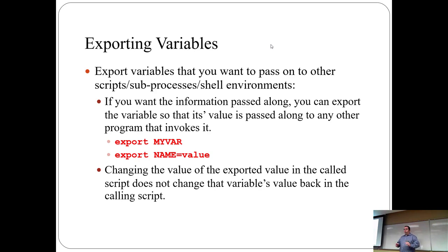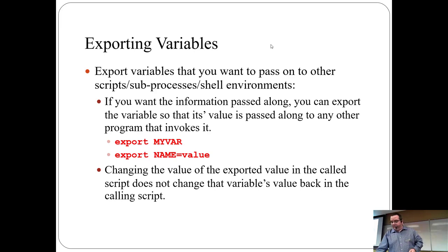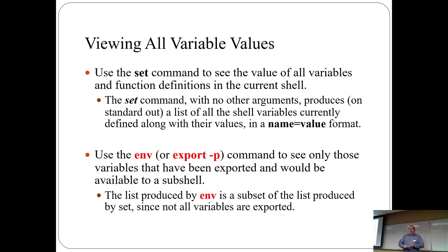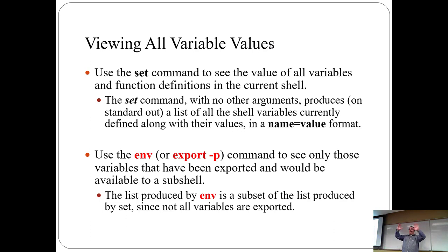An important point: script A exports a variable, then you run script B. If you change the value in script B, it's not going to affect script A because script A is already done. Changes go down — they don't go backwards; they're scoped to the currently running script. To see all variable values, run 'set' — it outputs everything. The 'env' command shows only the environment variables exported by scripts in your current session, while 'set' shows everything global to the whole computer plus your own.